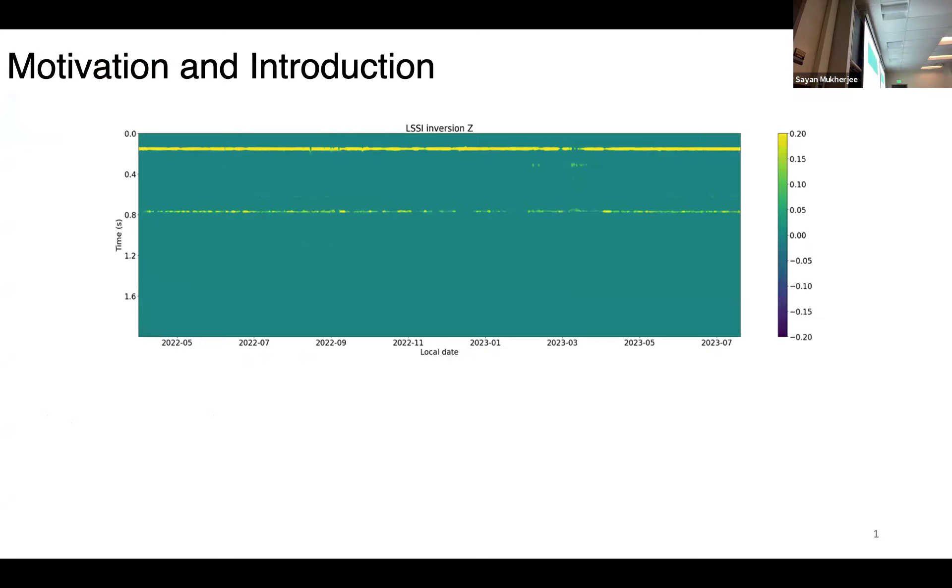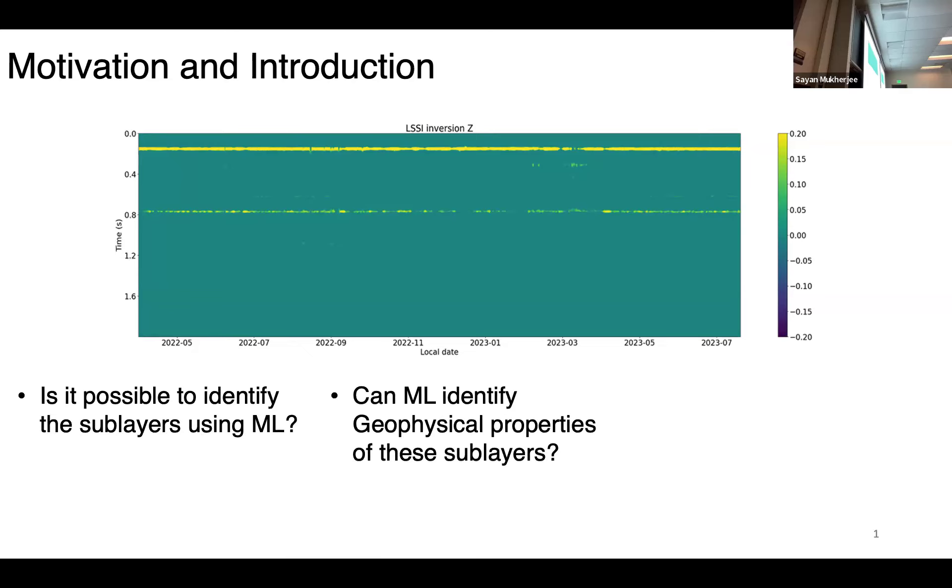If you remember from Fang's talk, he identified a two-layer model using autocorrelation. Diving further into this, we'll see if it's possible to identify the sublayers using machine learning algorithms, and if so, can the machine learning algorithm identify geophysical properties of these sublayers.